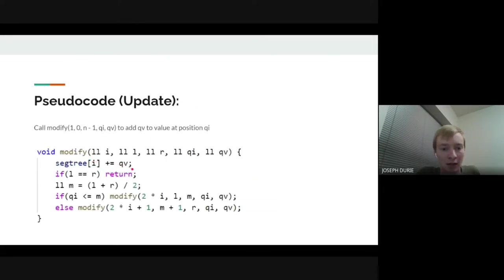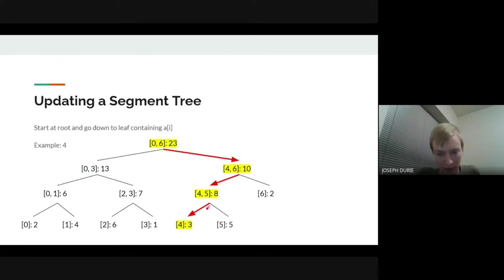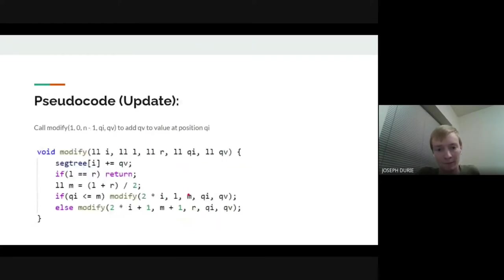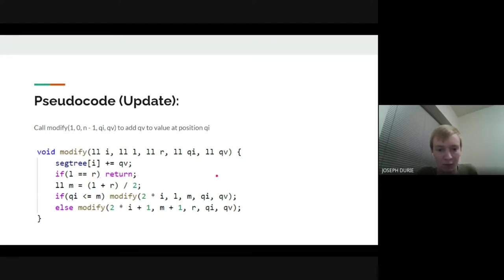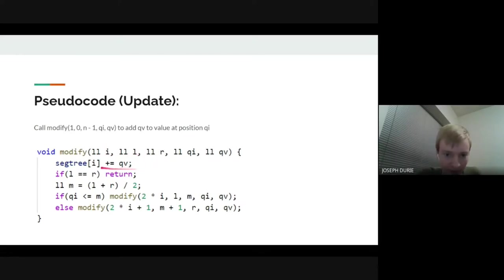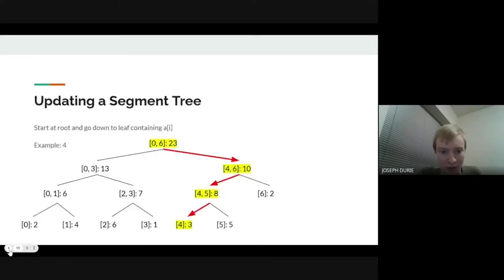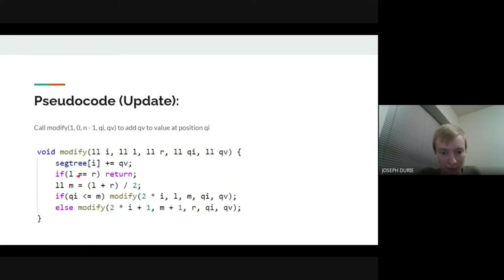The pseudocode for this: we start at the root and traverse down. We add qv (the amount we want to add to a[qi]) to the current node. qi is the index i in the query, and qv is the value to add to a[qi]. i, l, r are the same as in the query function — i is the node index and l, r is the range. We traverse down to one of the children based on whether qi lies in the first half or the second half.